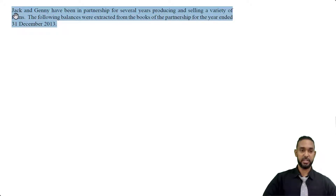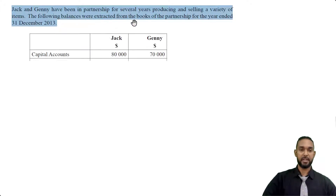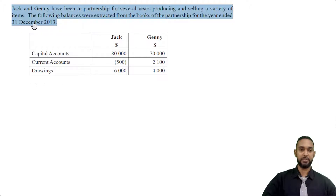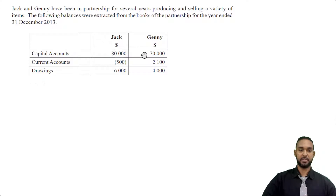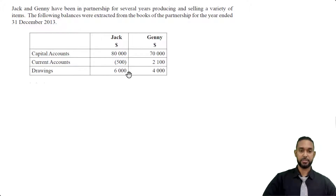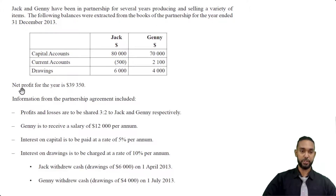So we have a partnerships question. It says Jack and Jenny have been in partnership for several years producing and selling a variety of items. The following balances were extracted from the books of partnership for the year ended 31st December 2013. We have capital account balances of 80 and 70 thousand respectively. Current account balances: the 500 has a bracket, which means that's a debit balance, and 2,100 for Jenny — no bracket implies a credit balance. Drawings are 6,000 for Jack and 4,000 for Jenny. Net profit for the year is 39,350.